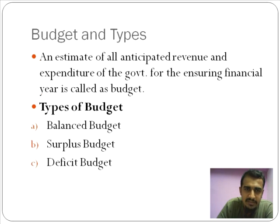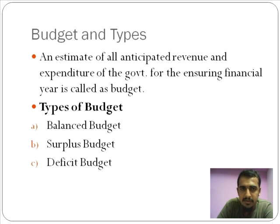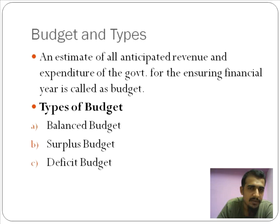A budget is an estimate of your expenses which would occur in the future. How do you know how much expenses you're going to have? By looking at how much revenue you're going to receive, you go about allotting that revenue to the various requirements that would incur in the future. When the 2014 budget is going to be presented, Chidambaram would have considered the revenue received in 2013 for allotting it for the expenses in 2014.